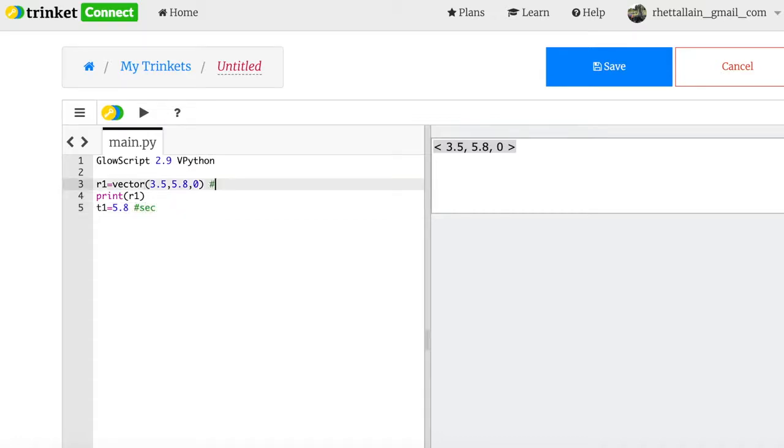And then r2 equals vector 8.1, 3.2, 0. And then watch this, I'm going to add them. That's not, we don't need to do that, but print r1 plus r2. So since they're both vectors I can add them in Python and it has a result right there. Look at that, it added those two vectors.